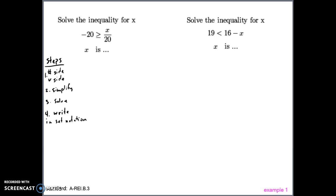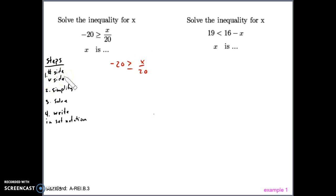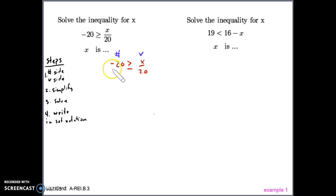Our first example: solve the inequality for x. The inequality is -20 ≥ x/20. We're going to solve so that x is by itself. First, declare number side and variable side — the number side is the side without a variable, and the variable side has the variable. There's nothing to simplify on either side, so we can start solving.